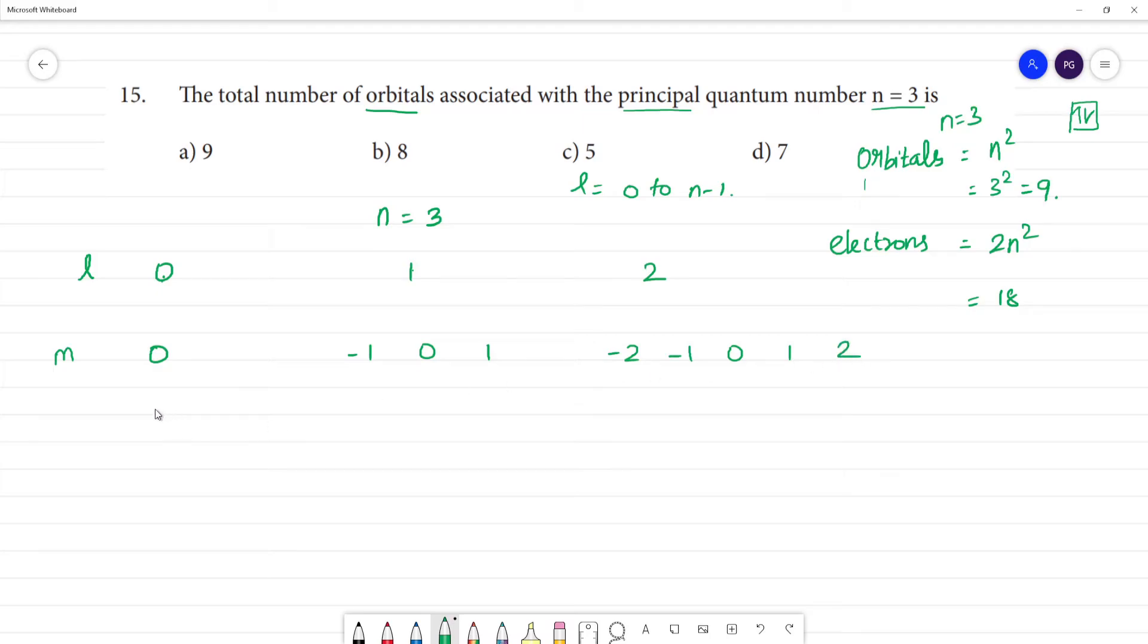So this one is s orbital, this is 1. This is p, this is d. 1, 2, 3, 4, 5d orbitals. So number of orbitals: this is 1 orbital, this is 3 orbitals, this is 5 orbitals. Totally, this is 9 orbitals.